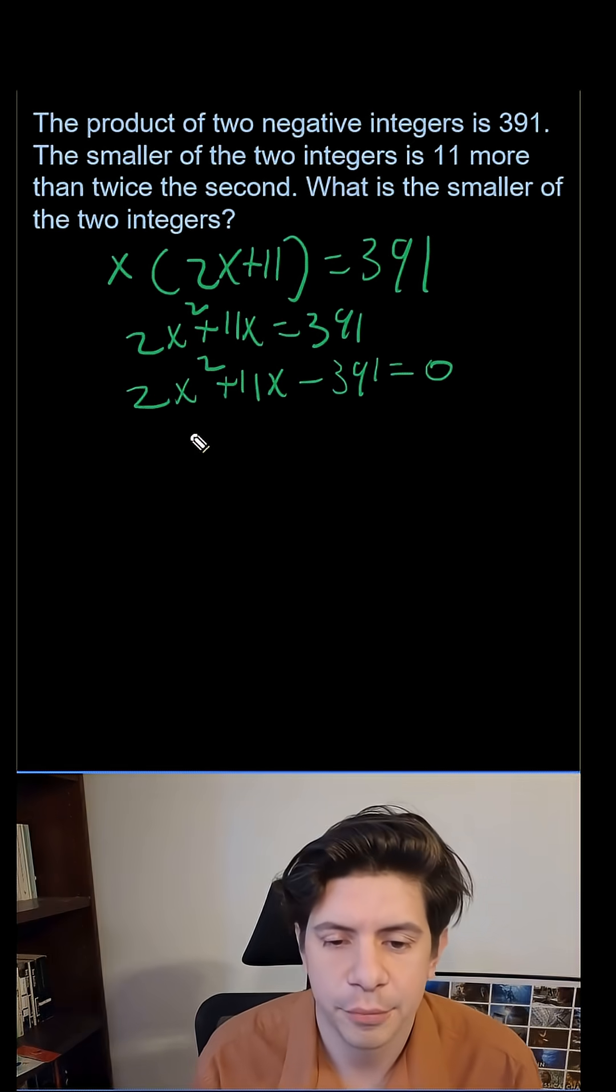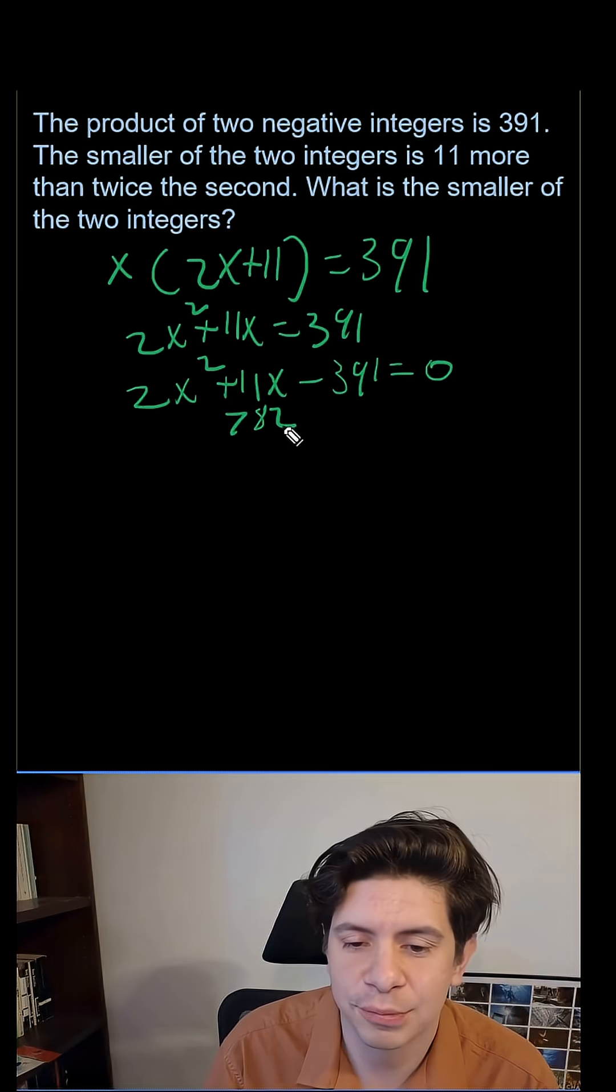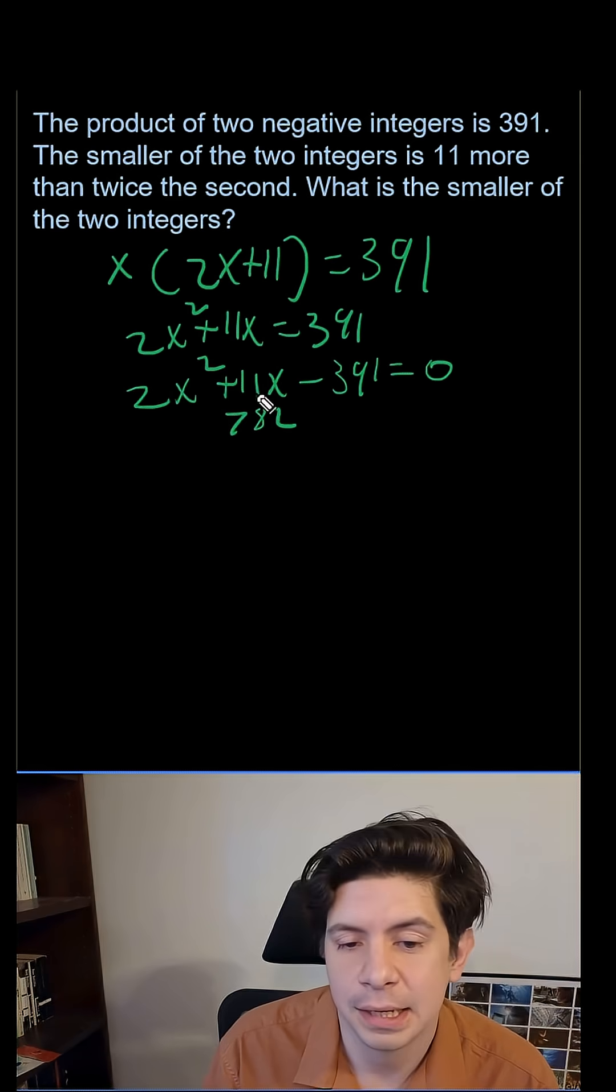And from there, 2 times 391 is going to get you 782. So what multiplies to negative 782 and has a difference of 11?